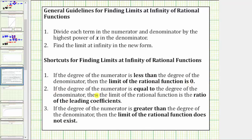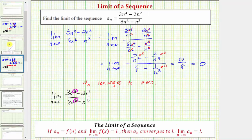If the degrees are equal, the limit is equal to the ratio of the leading coefficients. If the degree of the numerator is greater than the degree of the denominator, the limit does not exist. Here, because the degree of the numerator is less than the degree of the denominator, the shortcut gives us a limit of zero. This makes sense because the denominator is increasing faster than the numerator, and therefore the values approach zero.